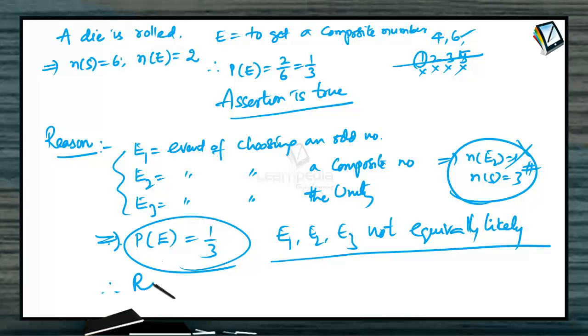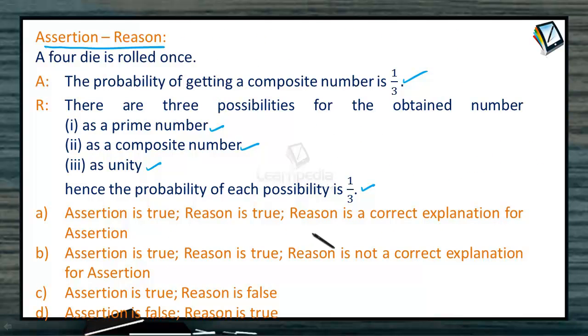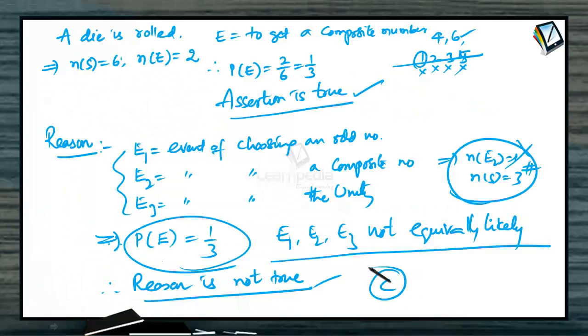Therefore, the reason is not true. The reason is false. So assertion is true, but reason is false. Therefore, we can conclude that assertion is true and reason is false. That is, option C is going to be the correct option for this question.